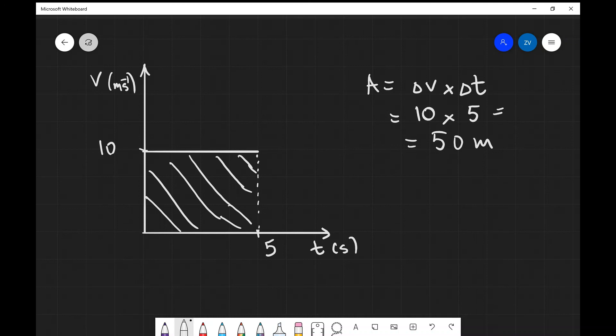So it's quite a simple example. However, in any velocity against time graph, the area will give us the displacement.